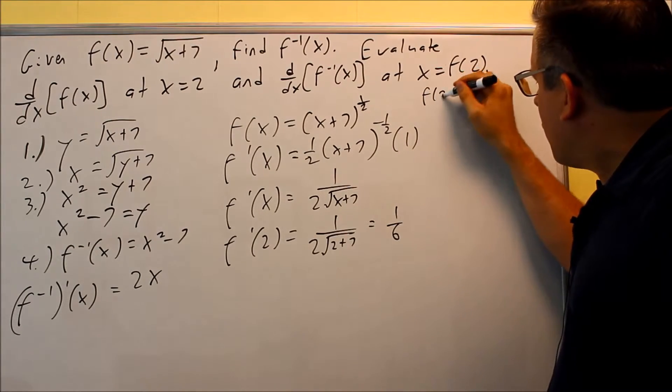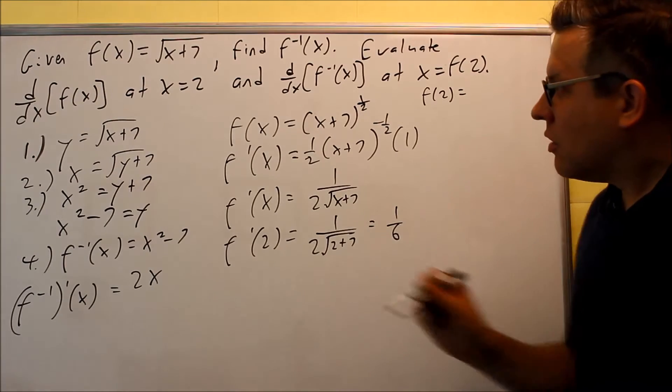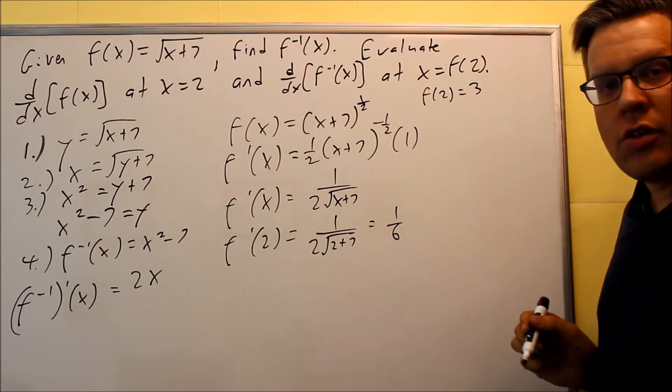What is f(2)? f(2), we put 2 into the original in place of x. That's the square root of 9, which equals 3. So this is saying they want you to put 3 in for x.